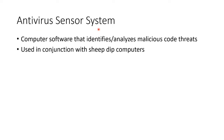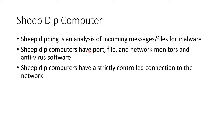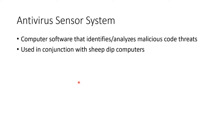You can have antivirus sensor systems. This is software that identifies and analyzes malicious code threats, used in conjunction with sheep dip computers. These are not just like AVG or Avast or something — they are meant specifically to analyze whole things and see whether or not they're clean. Not just an antivirus alone.